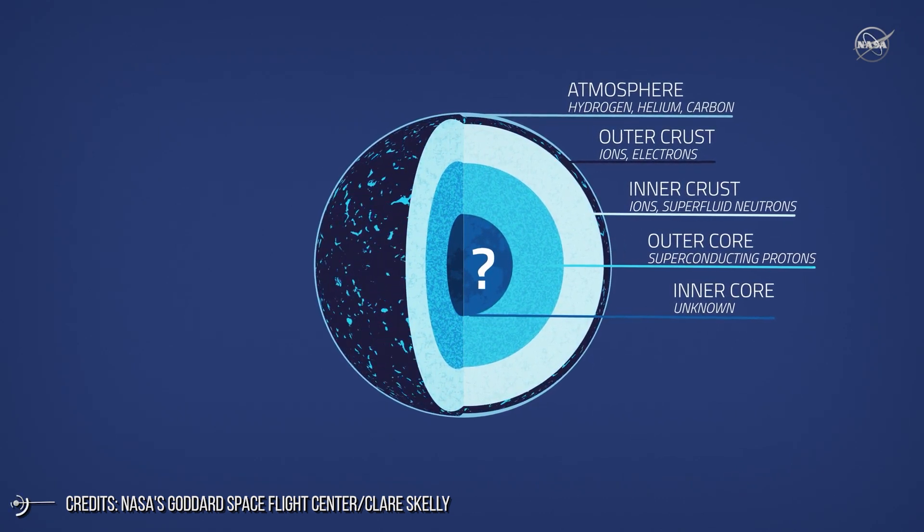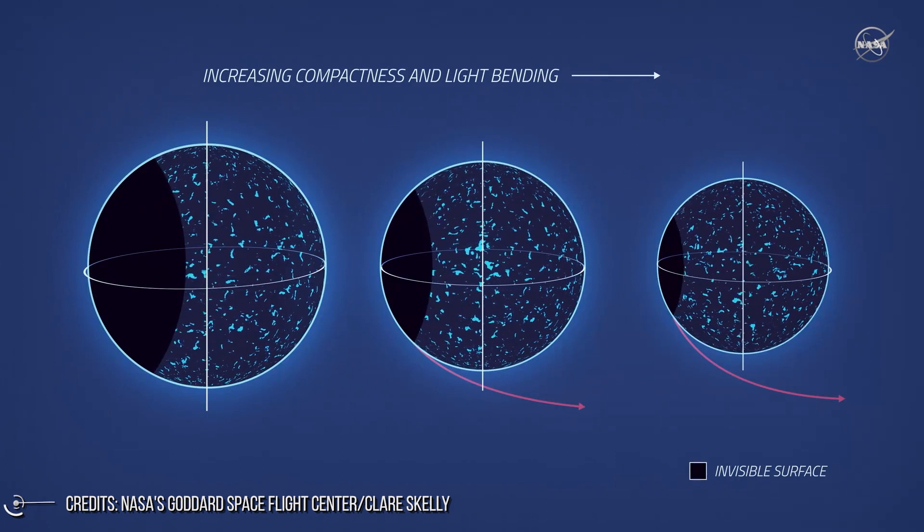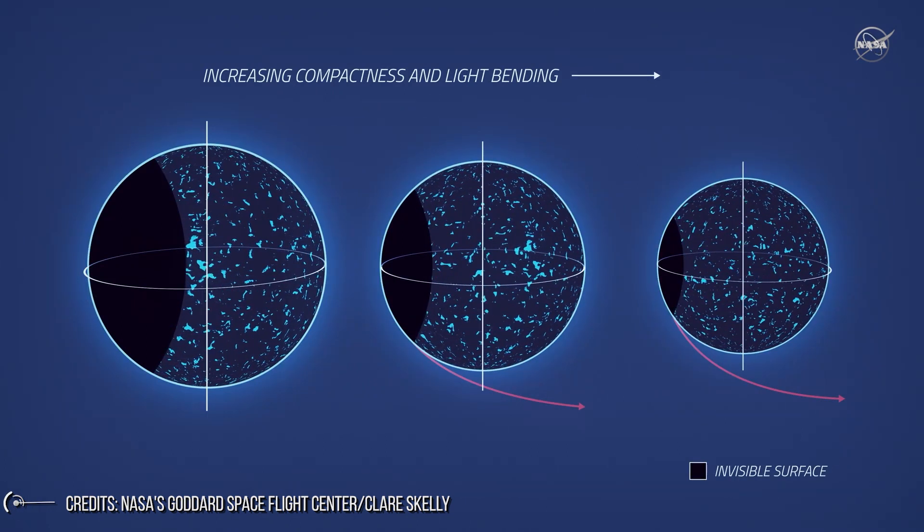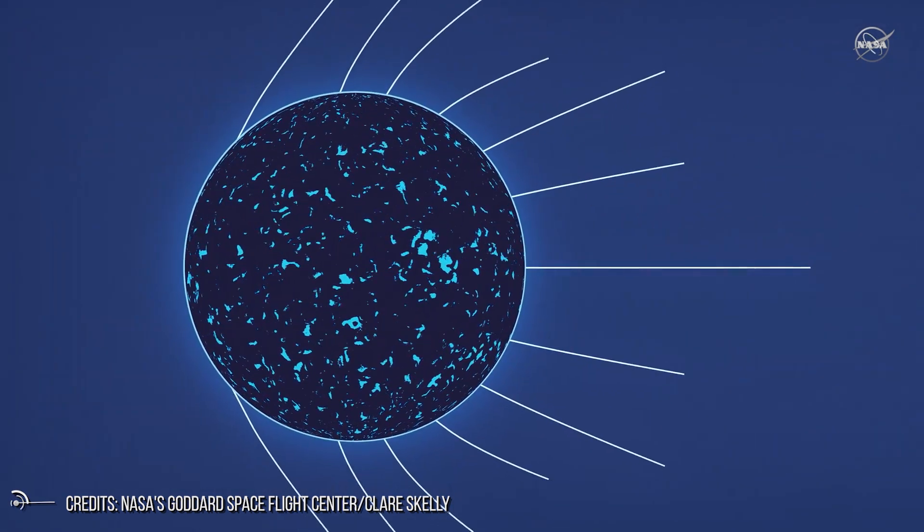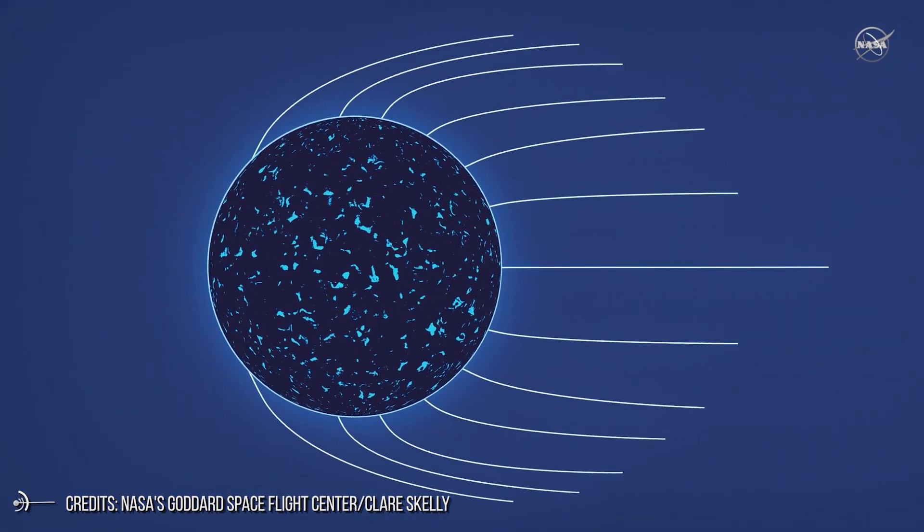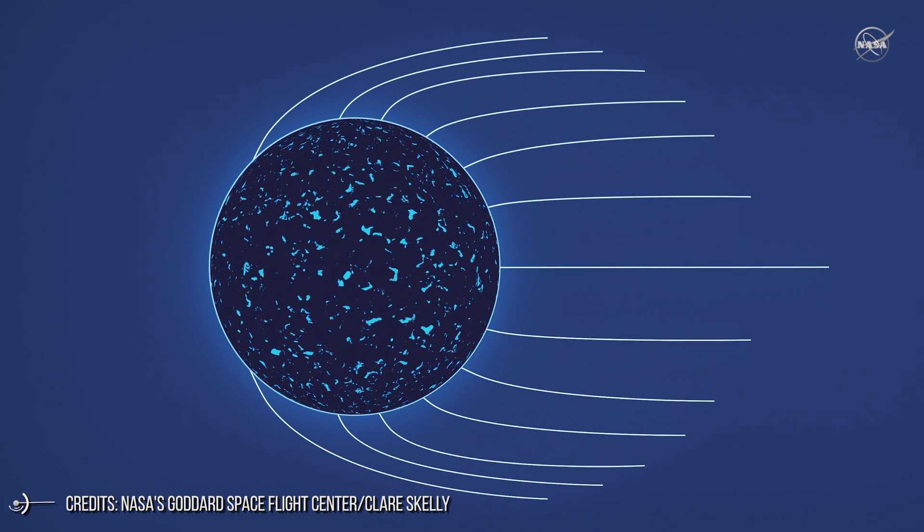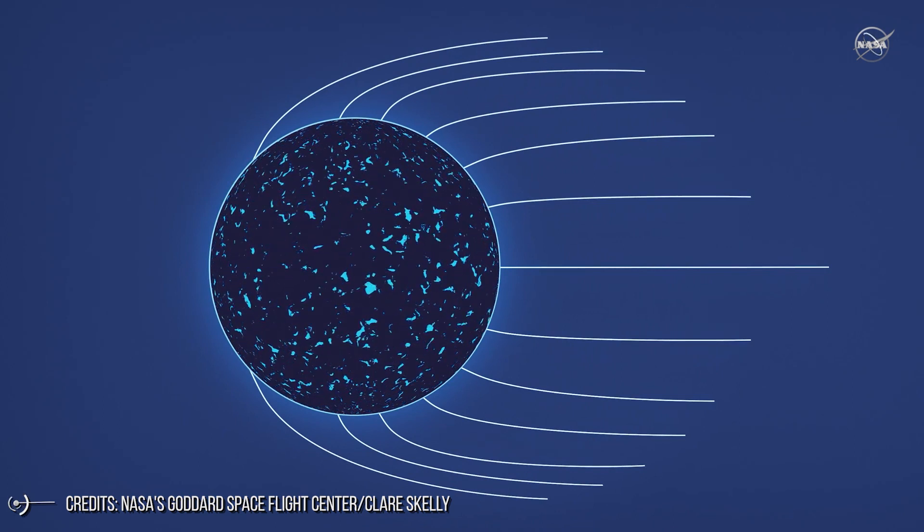As the rotation carries the first one and then the other magnetic pole of the star into our view, we see a pulse of radiation each time. This explanation of pulsars in terms of beams of radiation from highly magnetic and rapidly spinning neutron stars is a very clever idea.